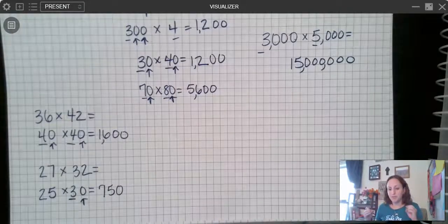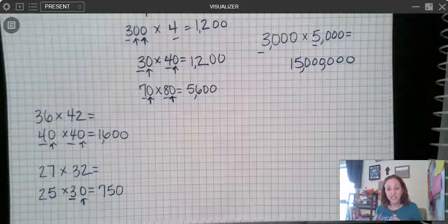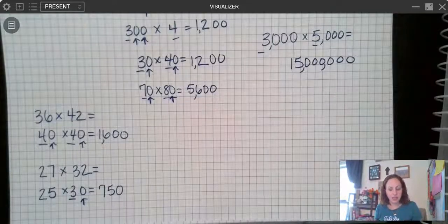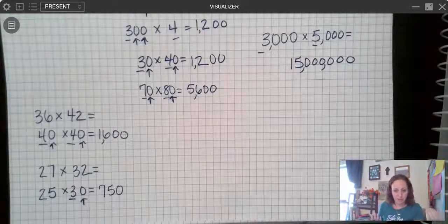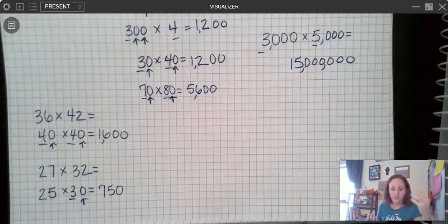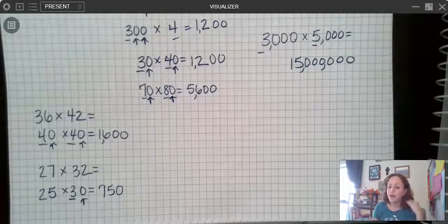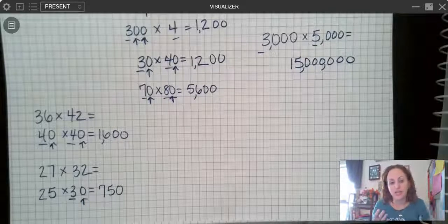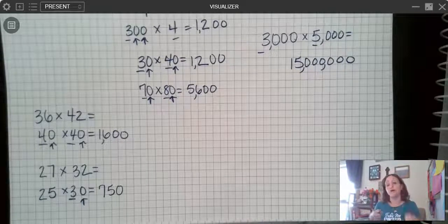So just kind of another way to look at that. So another one that would be a good compatible number is 15s. 15s are pretty easy to count by because you're counting up by a group of 10 and then a group of 5, group of 10, group of 5. So you can do that pretty easily in your head most of the time. So that might be another one where you would want to use the compatible number versus the rounded number.